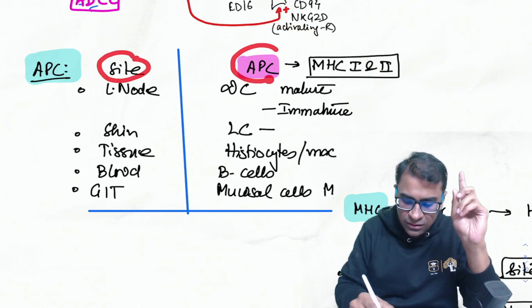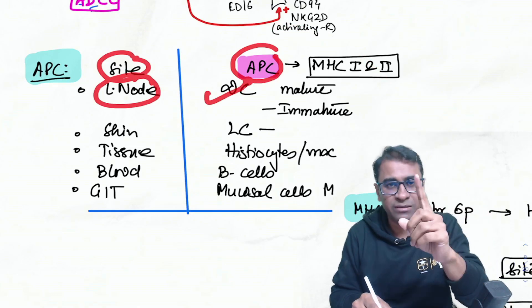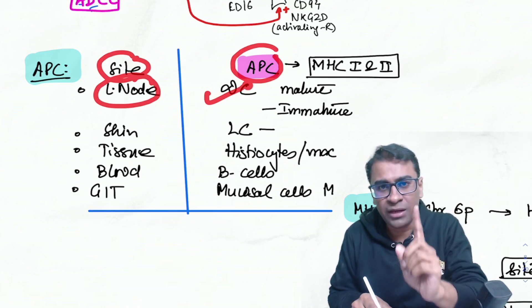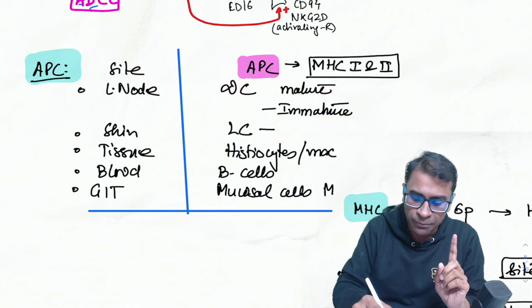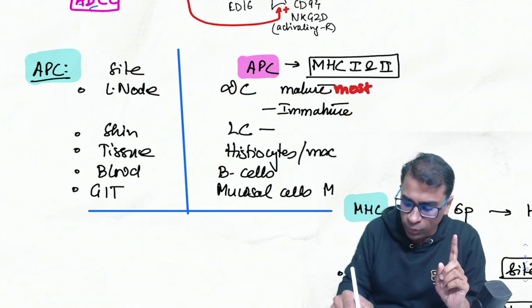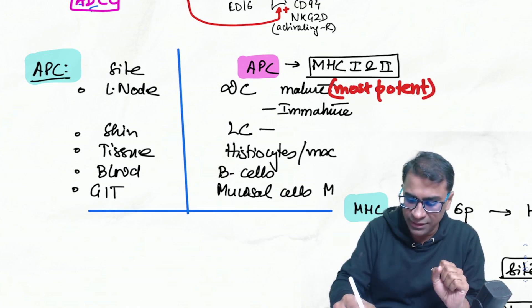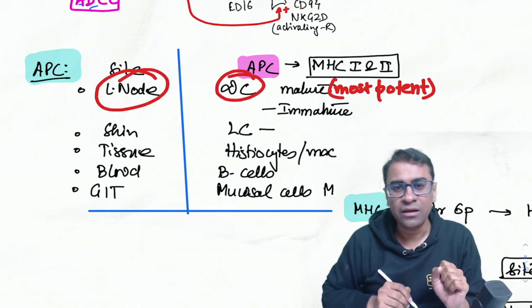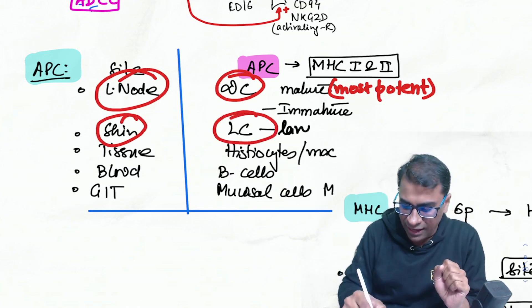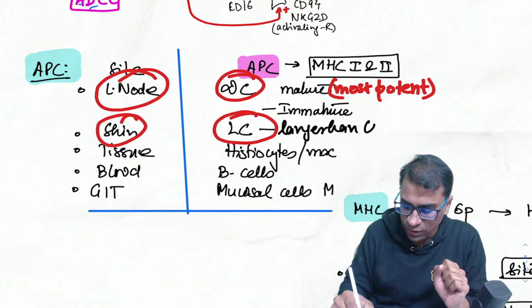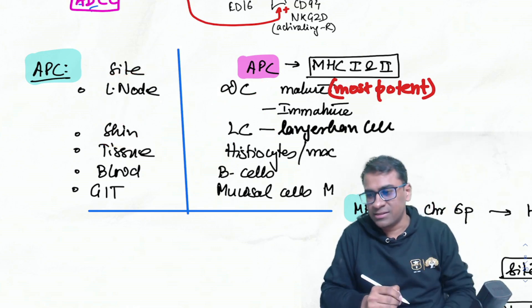The APC on lymph nodes is dendritic cells — both mature and immature. The most potent dendritic cell is the Langerhans cell.